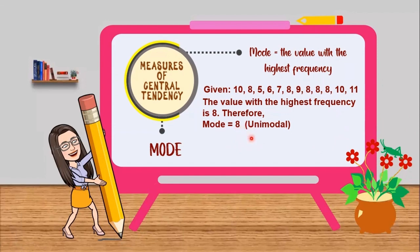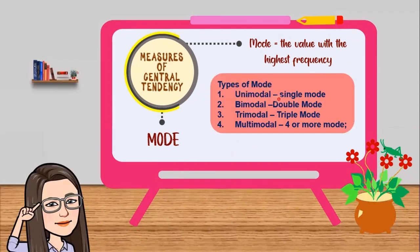We have types of mode. That is first unimodal, single mode, meaning there is only one mode in a set of data. Number 2, bimodal, double mode, meaning there are 2 modes that can be seen in a set of data.